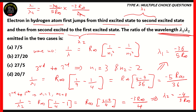4 goes into 36 nine times, and 9 times 3 gives 27. The Rydberg constant also cancels out, so the ratio of lambda-one to lambda-two is 27 over 5. Therefore option C, 27 over 5, is the correct option. All other options are incorrect because either the numerator, the denominator, or both values are wrong.